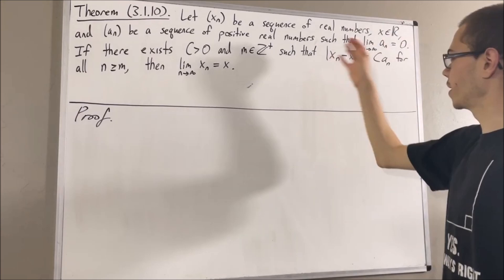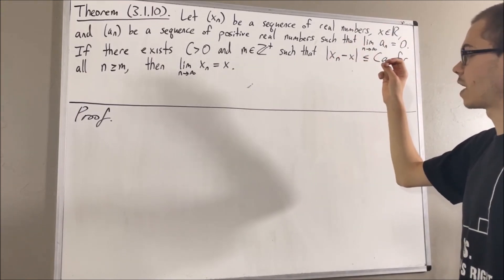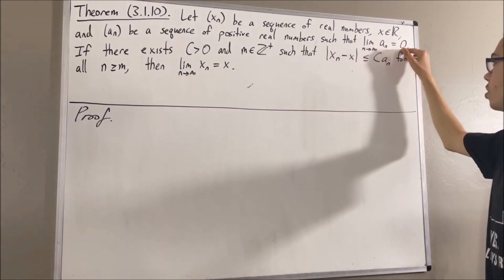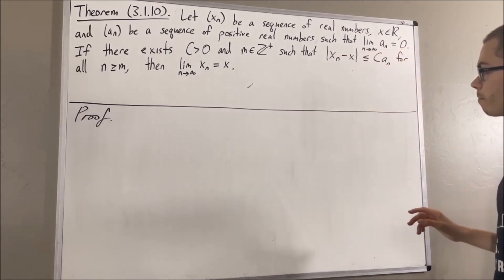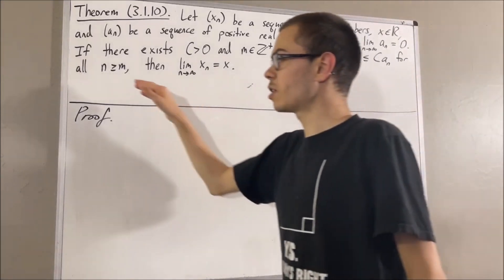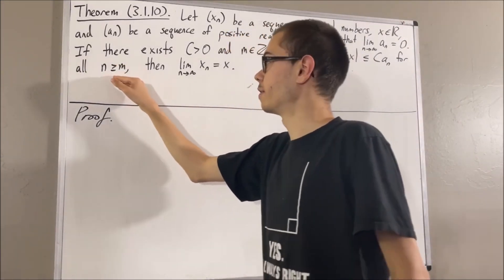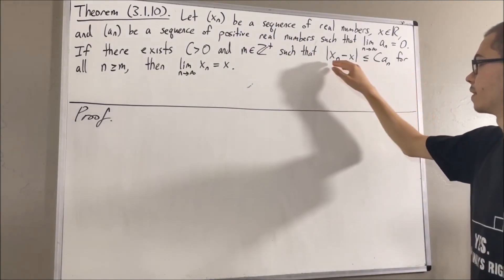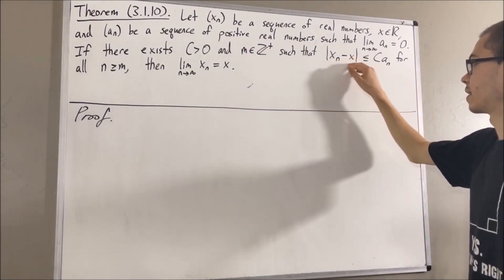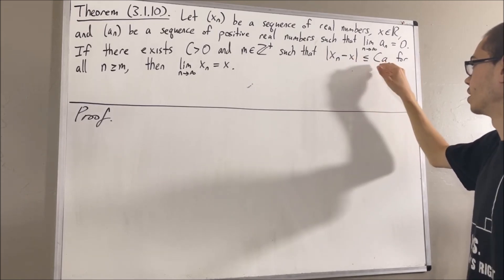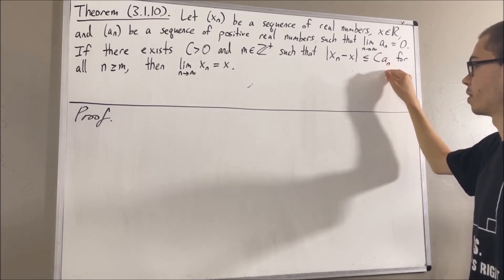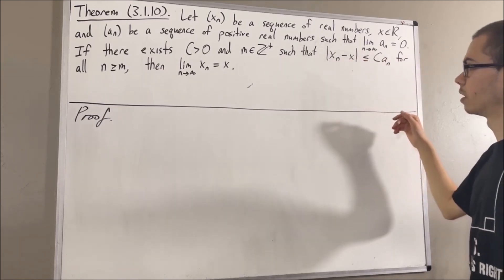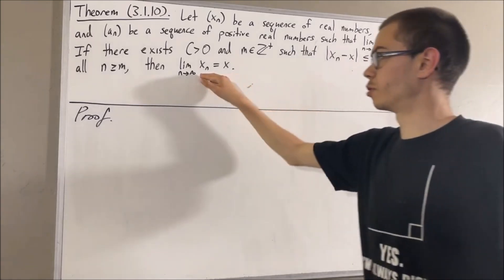Intuitively, this makes sense, because since an converges to zero, c·an will also converge to zero. And if we consider a really large value for n, then c·an will be essentially zero. And since the difference xn minus x is less than or equal to c·an, which is essentially zero, this tells us that the difference between xn and x will be essentially zero. And so we should expect xn to converge to x.